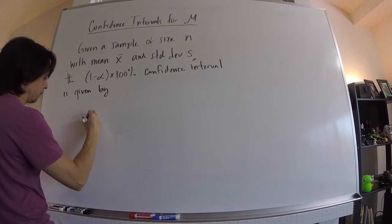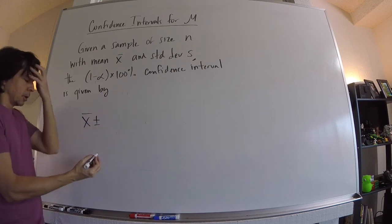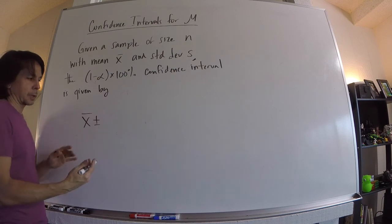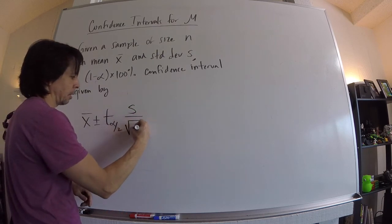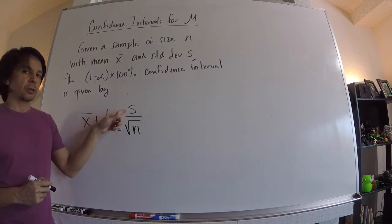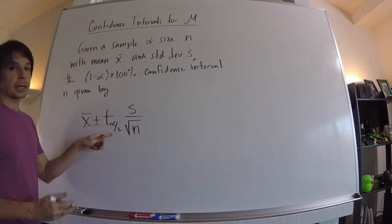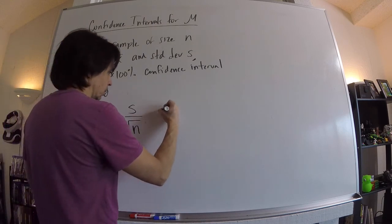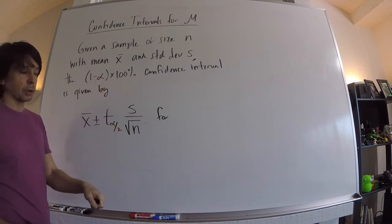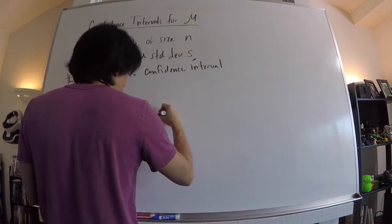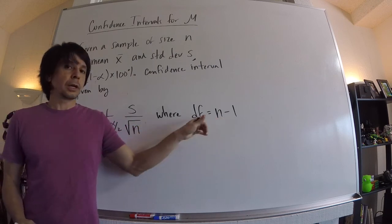The confidence interval is given by: x-bar plus or minus T times S divided by the square root of N. Instead of Z you use T for the spread based on confidence level, and S over the square root of N is the standard error. You'll need to look up T on the T-distribution table using your confidence level and your degrees of freedom, where DF = N minus 1. So whatever your sample size is, subtract 1 and use that as your degrees of freedom.